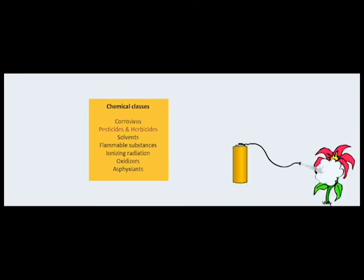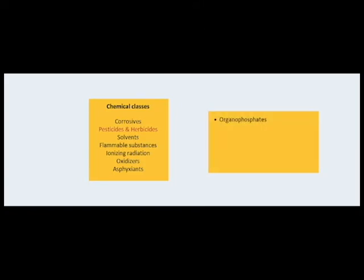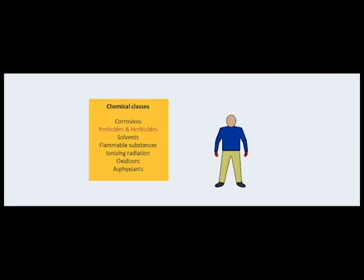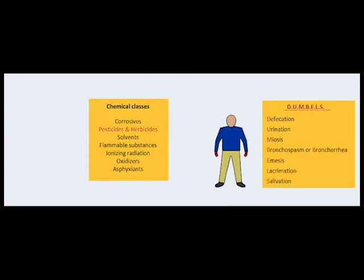Pesticides are a class of chemicals found in various physical states and are among the most poisonous agents used in agriculture and landscaping. This group includes both organophosphates such as parathion, malathion, and chemical warfare nerve agents and carbamates. A victim of pesticide exposure may exhibit a wide range of symptoms commonly referred to as DUMBBELS: defecation, urination, miosis, bronchospasm or bronchorrhea, emesis, lacrimation, and salivation. Pesticides are often mixed with solvents, so initial signs may be confused with solvent exposures.